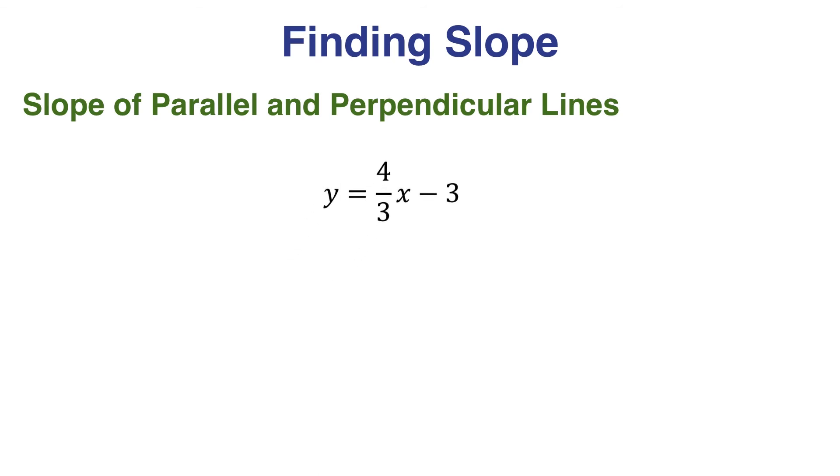Great. So we just converted a standard form equation into slope-intercept form so we can easily identify the slope of this line, which is 4 thirds.